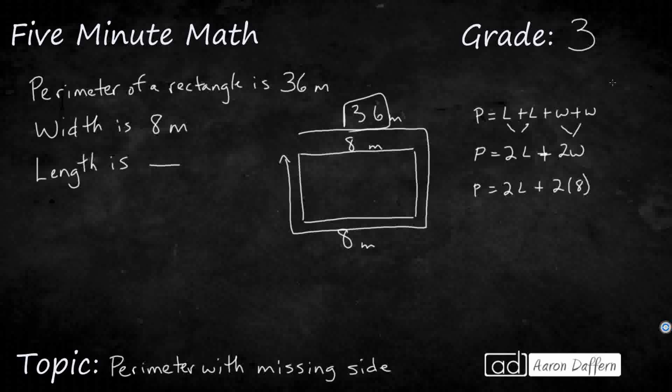So that means my perimeter, which I guess I can go and replace that with 36, can't I? Equals double the length plus what's 2 times 8. That's 16. Okay, so how far away is 36 from 16? That is 20. So I need this to equal 20.